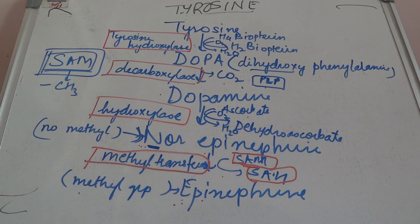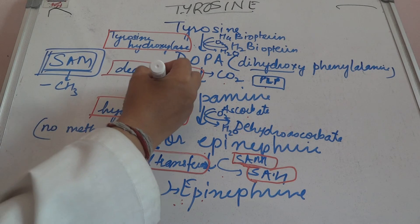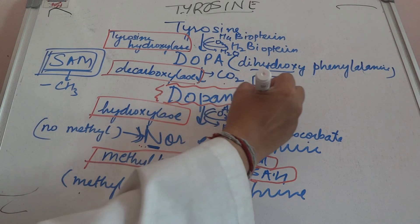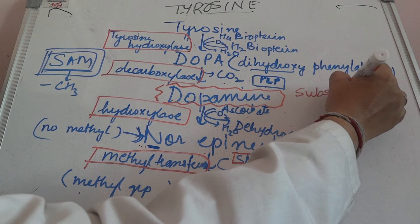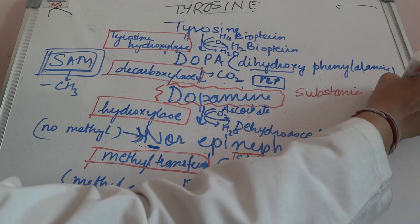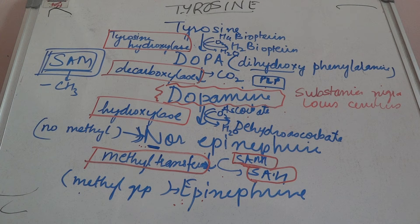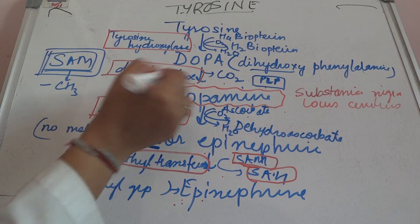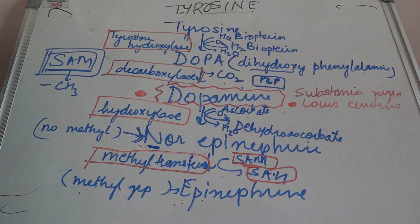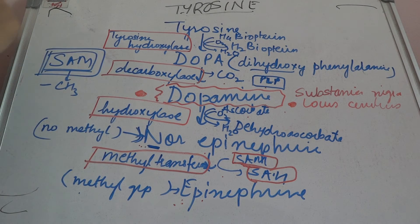SAM plays an important role in transferring the methyl group. Norepinephrine, epinephrine, and dopamine are all important. Dopamine has functions in the locus coeruleus and substantia nigra, important for certain central nervous system activities. If there is decreased production of dopamine in the substantia nigra and locus coeruleus, it leads to Parkinson's disease.